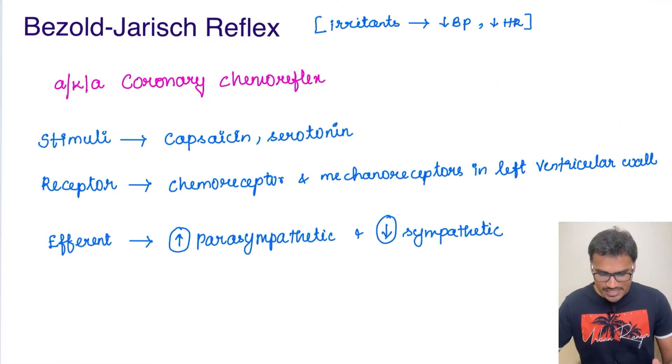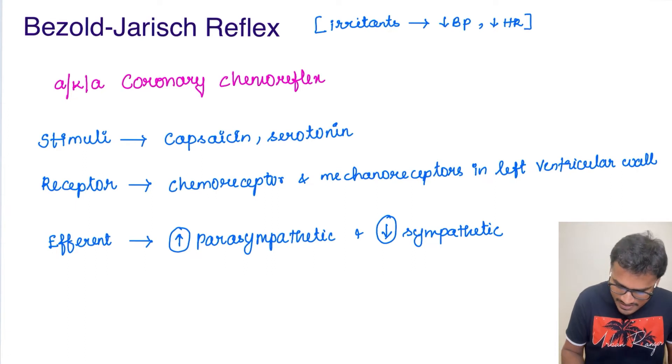So let's try to understand what is this reflex. Just remember in one single line: whenever there are irritants in the heart, there is going to be a decrease in blood pressure and decrease in heart rate. Let's try to understand how this happens.